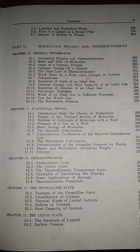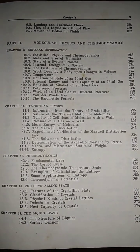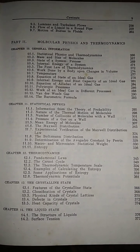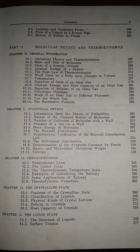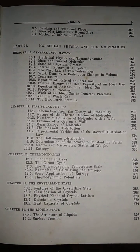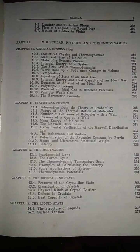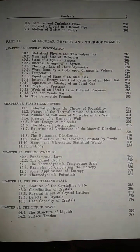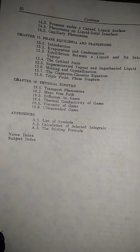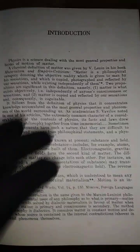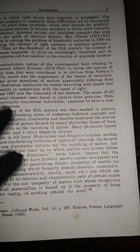Part 2 is molecular physics and thermodynamics, covering general information about molecular physics and thermodynamics, the barometric formula, statistical physics, thermodynamics, the crystalline state, the liquid state, phase equilibria and transitions, and physical kinetics. Those are the contents of volume 1.